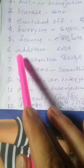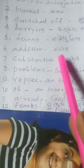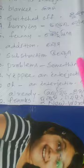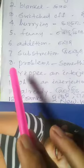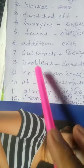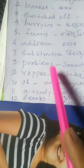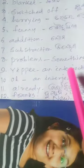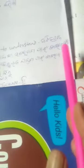Number 6: Addition — Joga. Number 7: Subtraction — Bhag. Number 8: Problems — P-R-O-B-L-E-M-S. Problems means something hard to understand — Jotida pashna.